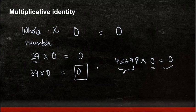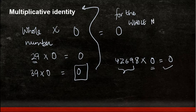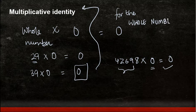So 0 is also known as the multiplicative identity for the whole numbers.